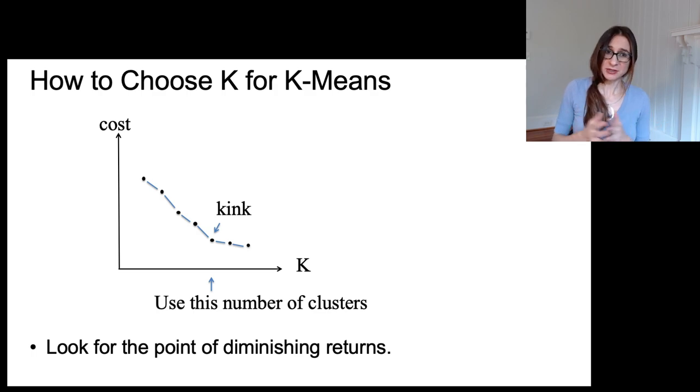So k-means is relatively cheap to run, so what people often do is they run it multiple times for different values of k, and then of course for each value of k you want a bunch of replicates with different initial seeds so that you hopefully get the best cost for that value of k.